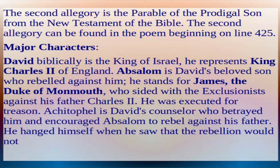Major Characters: David, biblically the king of Israel, represents King Charles II of England. Absalom is David's beloved son who rebelled against him; he stands for James, the Duke of Monmouth, who sided with the exclusionists against his father Charles II and was executed for treason. Achitophel is David's counsellor who betrayed him and encouraged Absalom to rebel against his father.